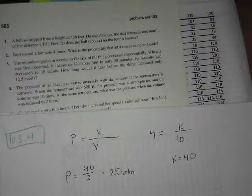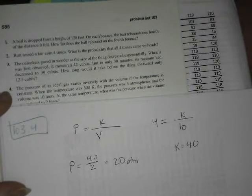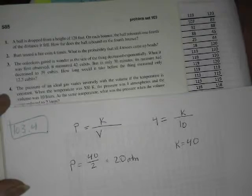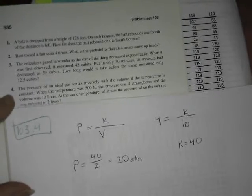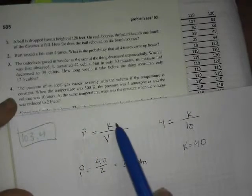This is lesson 103, number 4. It says pressure of an ideal gas varies inversely with the volume if the temperature is constant. So pressure varies inversely as volume.